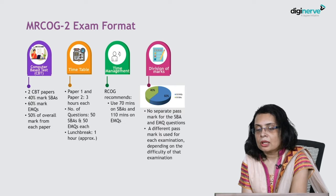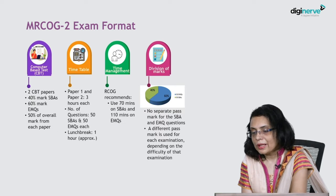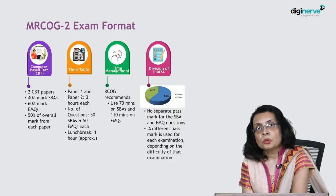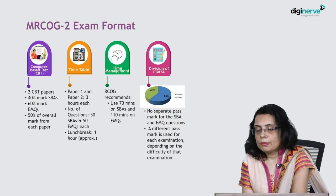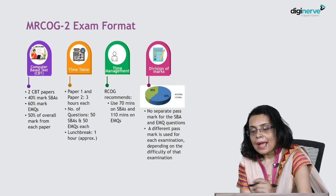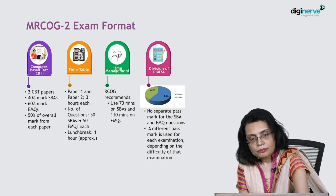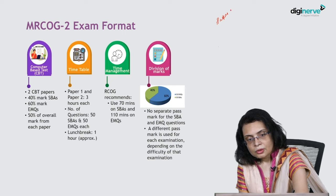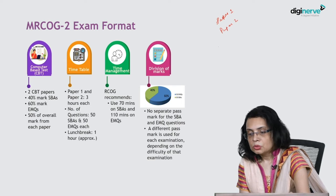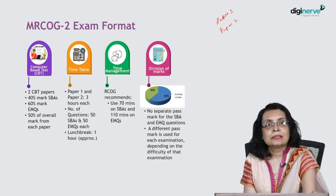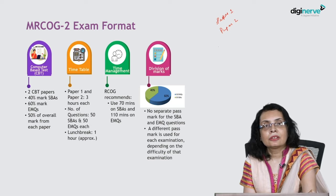Now talking about the format of MRCPG Part 2 exam. Again there are two computer-based papers — Paper 1 and Paper 2 — and each of these papers will have 100 questions.